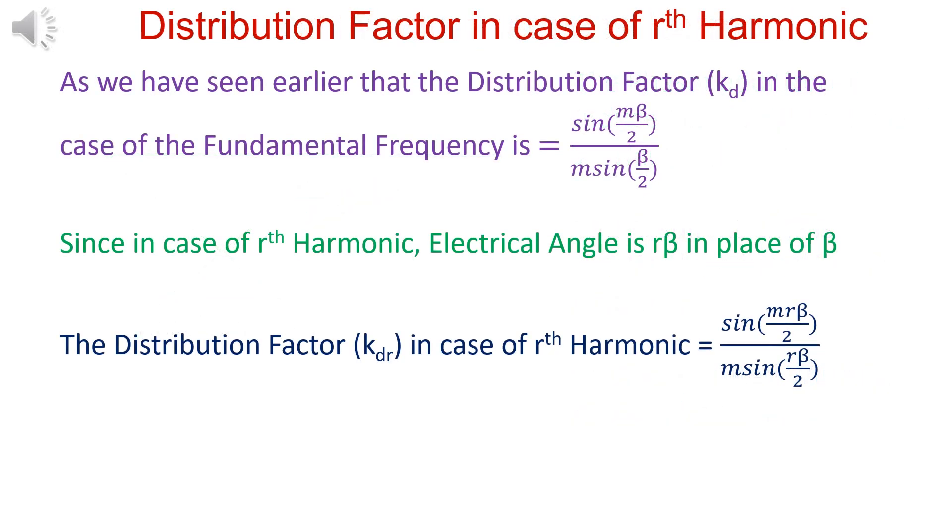Since in the case of rth harmonic, electrical angle is r beta in place of beta, distribution factor is equal to sin m r beta by 2 divided by m sin r beta by 2.